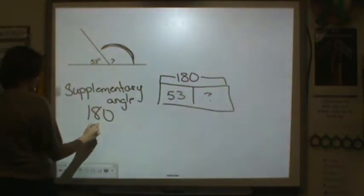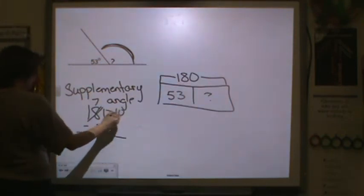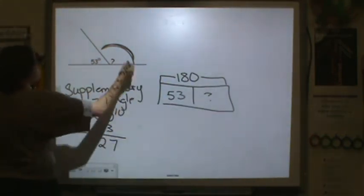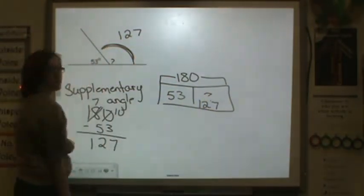We're going to have to regroup. 3 from 10 is 7. 5 from 7 is 2. So this missing piece would be 127.